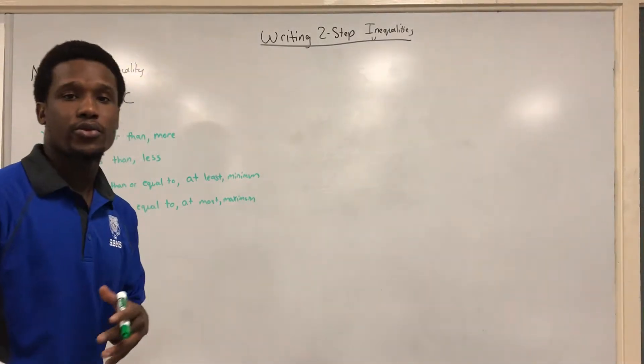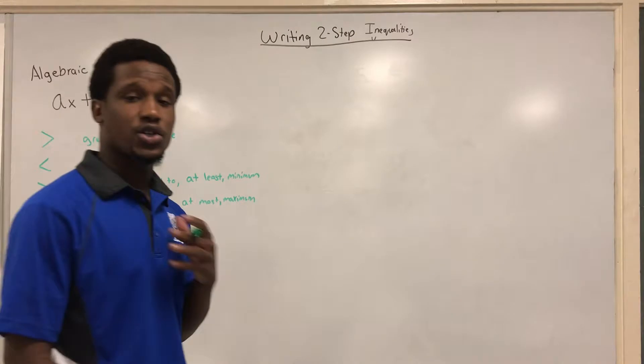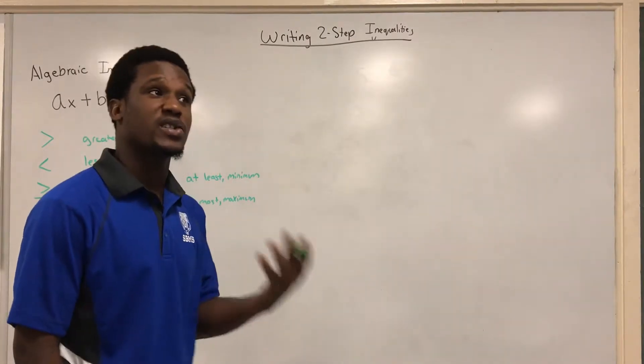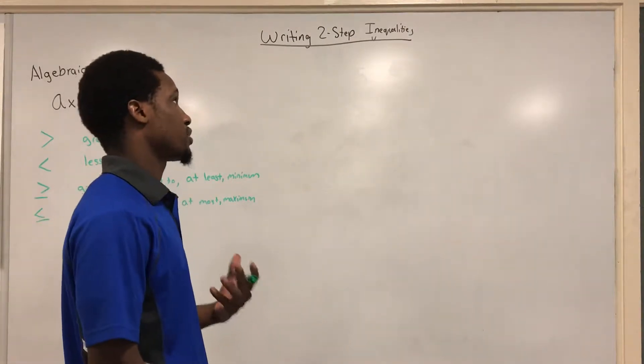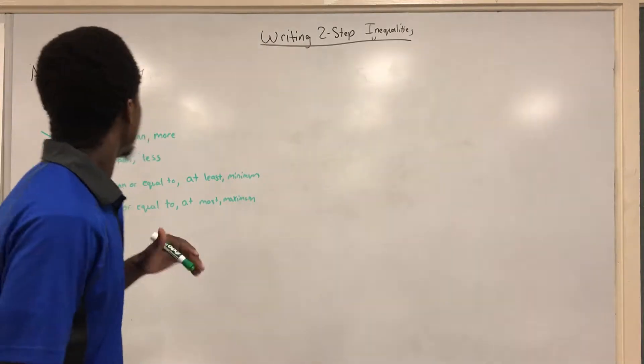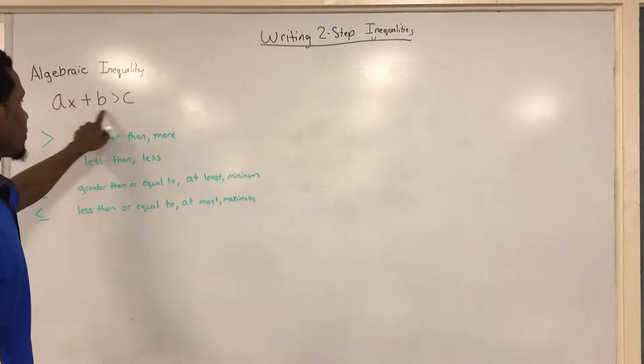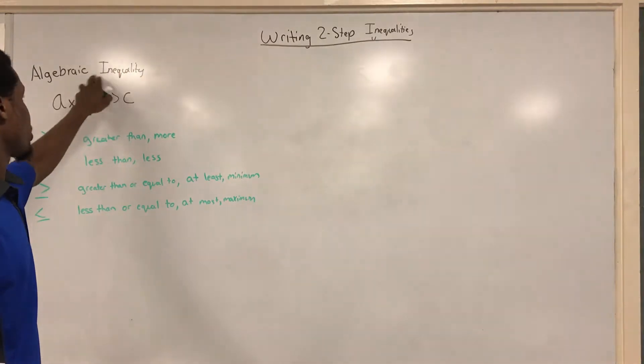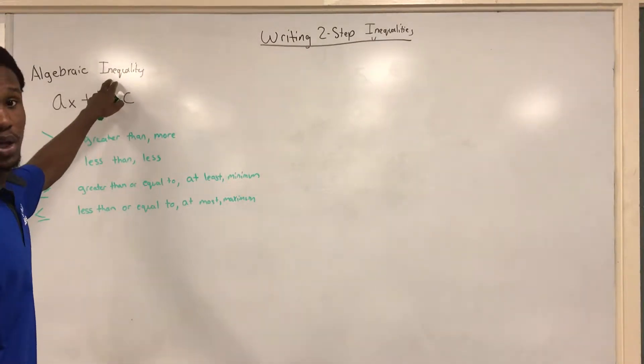Okay, so we've already gone through writing two-step equations. We're just going to go ahead and take it one step further and talk about how to write two-step inequalities. Now to do that, we still want to keep the same algebraic equation format, except we're going to turn this into an algebraic inequality.